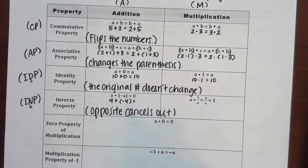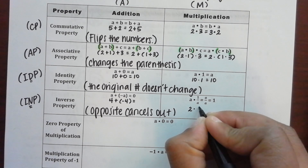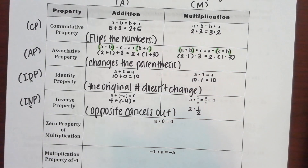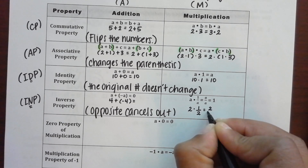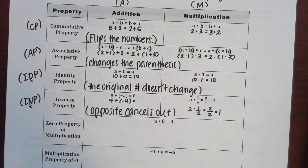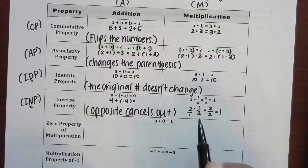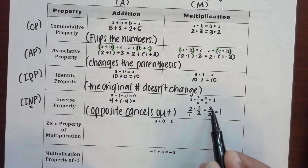Now let's look at the multiplication side. We read this as: a times one-over-a equals a-over-a, and when you divide anything by itself it becomes one. So I'll give you the number two: two times one-over-two, which becomes two-over-two, which equals one. How do I turn two into a fraction? By putting it over one. With multiplication, do I just multiply across? What's two times one? What's one times two? What's anything divided by itself? One.